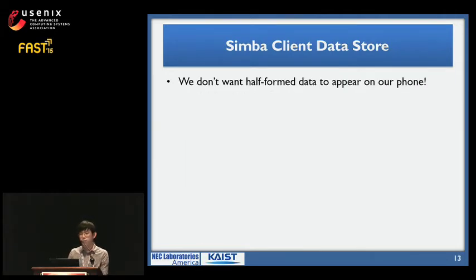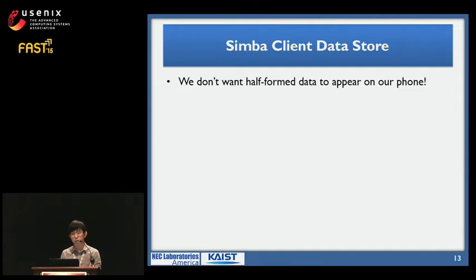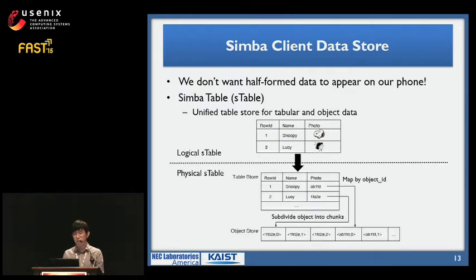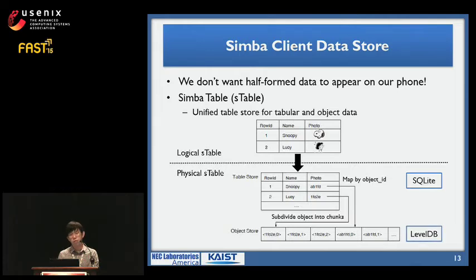Why do we want a unified store? Because you don't want half-formed data to appear on your phone — for example, you wouldn't want an updated photo object to appear while the metadata is from the previous version. Simba data store provides a logically unified table store, implemented physically as a table store with an object ID linking to an object store. For fine-grained syncing, we further subdivide the object into chunks. Our current implementation uses SQLite for the table store and LevelDB for the object store. Since no object store code existed for Android, we ported LevelDB ourselves.